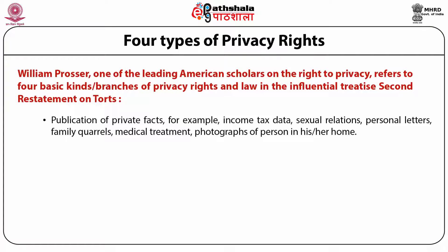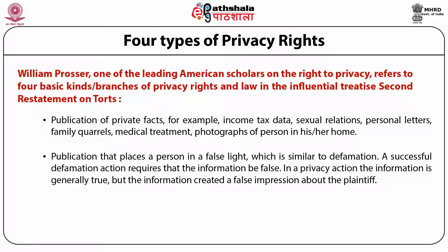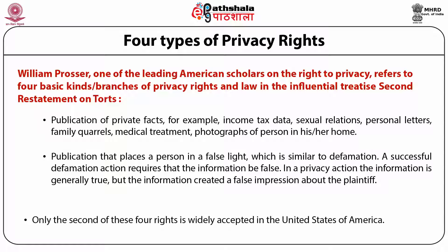The third category is the publication of private facts — for example, income tax data, sexual relations, personal letters, family quarrels, medical treatment, photographs of a person in his or her home — all without consent. The fourth category is publication that places a person in a false light, somewhat similar to defamation. In a privacy action, the information is generally true but created a false impression about the plaintiff. Only the second of these four rights — appropriation of a person's name or likeness — is widely accepted in the United States.